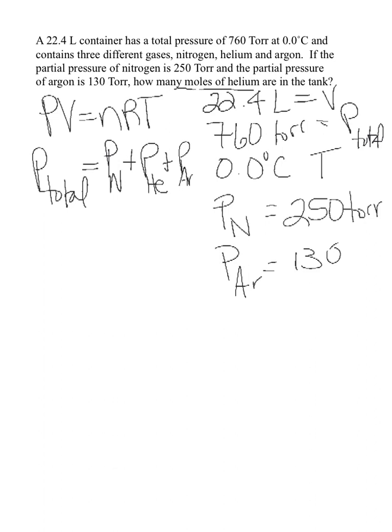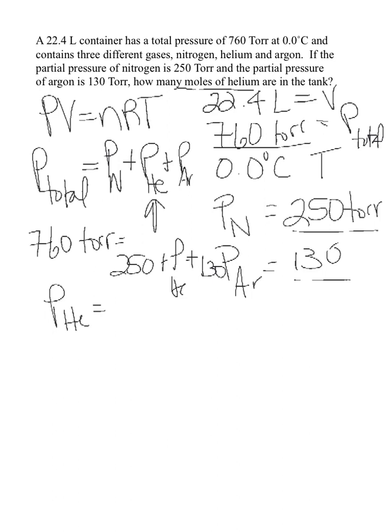We have the total pressure – it was given to us in the problem – as was the pressure of the nitrogen and the argon. So we can solve for the pressure of the one we don't know, the pressure of the helium. So 760 torr is equal to 250 torr plus the helium, which we don't know, plus the argon, which is 130 torr. So we can solve for the pressure of the helium by subtracting the 250 and subtracting the 130 from both sides. That leaves us with a partial pressure of helium of 380 torr.